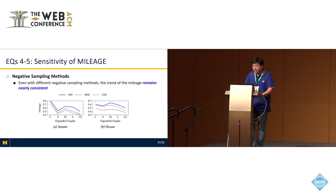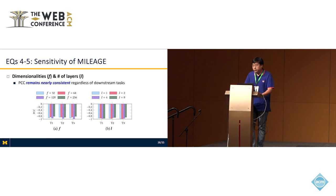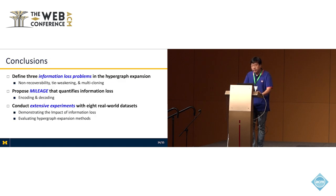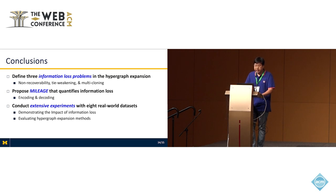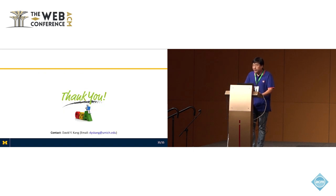We also observed that the mileage score is agnostic to the negative sampling method and insensitive to the parameters used in MILEAGE. In conclusion, we define three information loss problems in hypergraph expansion, propose MILEAGE to quantify the information loss, and conduct extensive experiments with eight real-world datasets to demonstrate the impact of information loss and to evaluate hypergraph expansion methods. Thank you for listening.